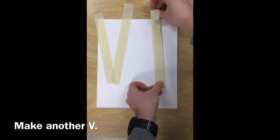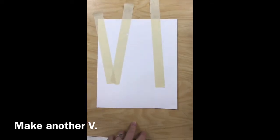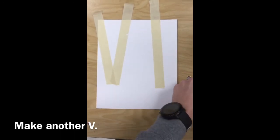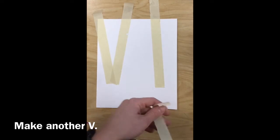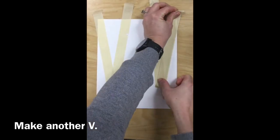Then make another V on the right side of your paper. Slightly angle the third tree, and then add a fourth tree.